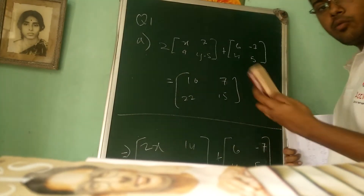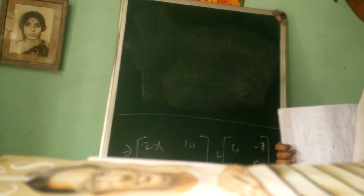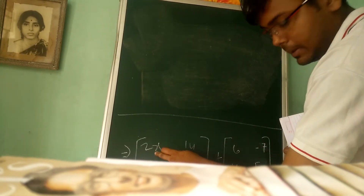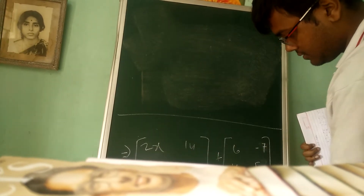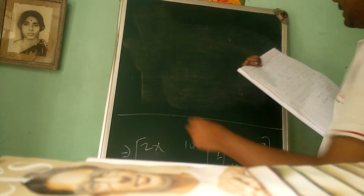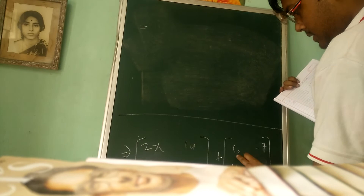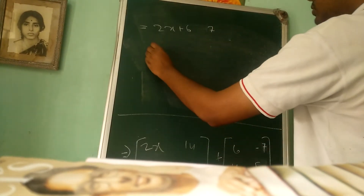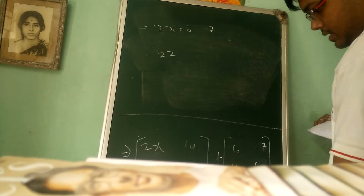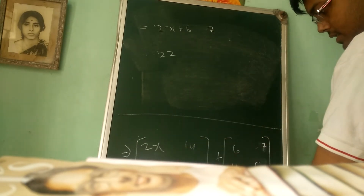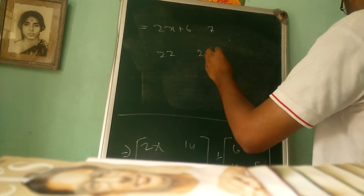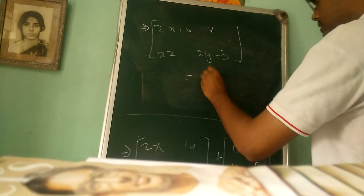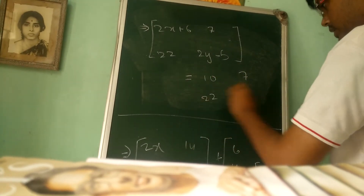I am rubbing the board now. If you want you can pause the video and look after it. So after adding, you can easily see that we get 2x plus 6, and we get 14 minus 7 that is 7, we get 18 plus 4 that is 22, and we get 2y minus 10 plus 5, that is 2y minus 5.